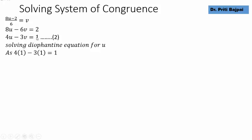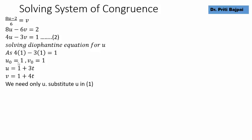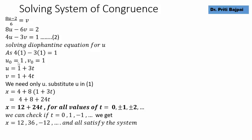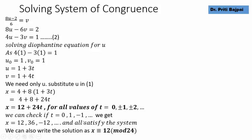Solving equation 2 by inspection: U = 1, V = 1 gives 4(1) − 3(1) = 1. So U₀ = 1, V₀ = 1, and the general solution is U = 1 + 3T, V = 1 + 4T. Substituting U = 1 + 3T into equation 1 gives X = 12 + 24T for all integer T. Taking T = 0, 1, −1 gives X = 12, 36, −12, and all satisfy the system. This can also be written as X ≡ 12 mod 24.